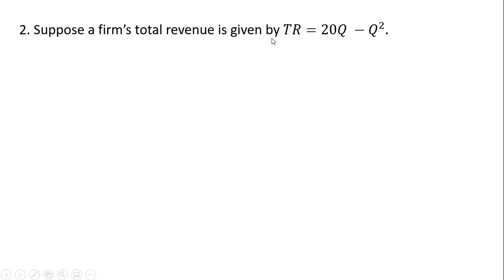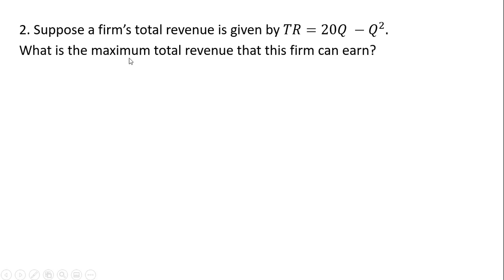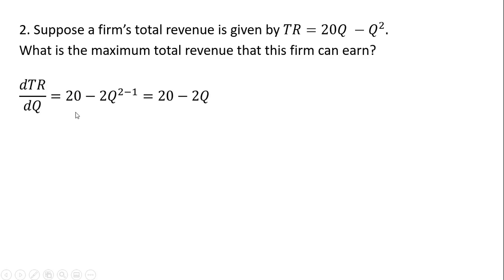Problem two: suppose a firm's total revenue is given by this equation. What is the maximum total revenue that this firm can earn? This is a slightly different question — we want to find the actual dollar amount of total revenue when it is maximized. The steps are similar: taking the derivative of 20Q gives 20, bring the 2 down from the exponent and subtract 1, giving us 20 minus 2Q. Setting that derivative equal to 0 and solving for Q.